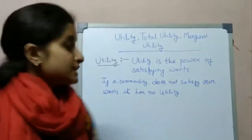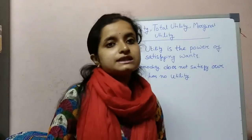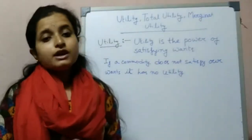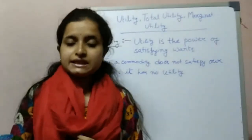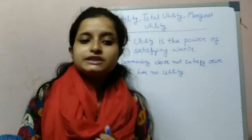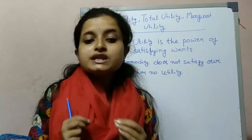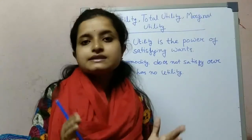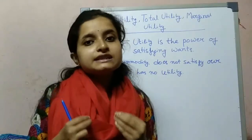If a commodity does not satisfy our wants, it has no utility. For example, a smartphone satisfies our wants. But this smartphone has no utility for an illiterate person, because he does not know how to handle it. So this smartphone has no utility for an illiterate person, but for others it has utility.